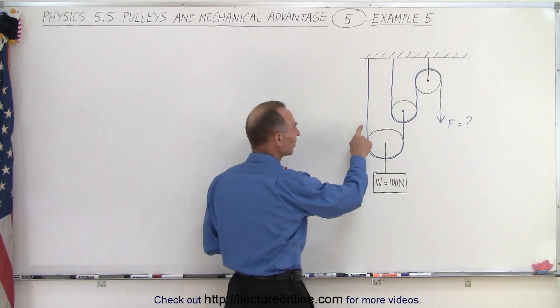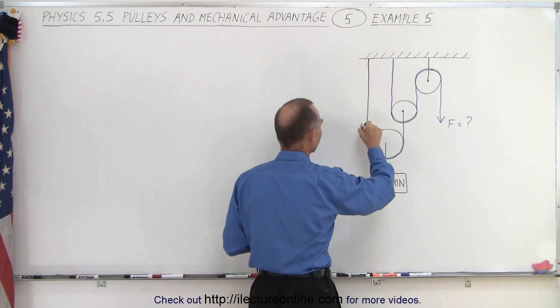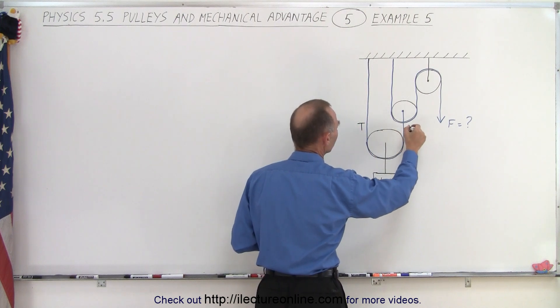If that is the case we know that the tension on this side of the pulley must be the same as the tension on that side of the pulley. So we can say that tension here must equal the tension over there.